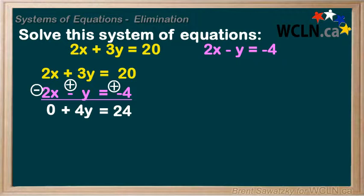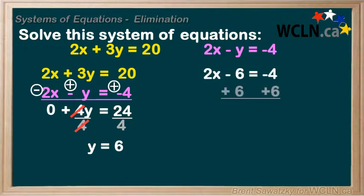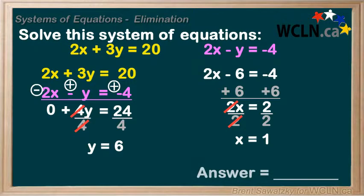To finish things off, we just solve for y. We see that we're multiplying by 4, so divide by 4, and we have y equals 6. But we're not done — we need to solve for x to provide a complete solution, that is, an ordered pair. Plugging 6 into the second equation and solving: add 6 to both sides, divide by 2, and we have x equals 1. So our full solution is (1, 6), or x equals 1 and y equals 6.